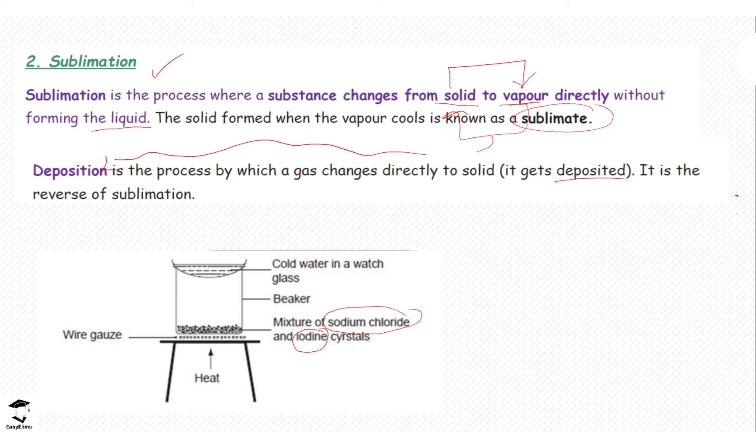We have the heat with the wire gauge and the tripod stand, and on top of the stand we have the beaker containing the mixture, and then we have also a watch glass containing cold water. So what is going to happen is when you heat the mixture, the iodine crystals which sublime are the ones that are going to sublime, and then the fumes are going to go up in the beaker because it has changed from solid to liquid. Then when it comes into contact with the cold watch glass, it's going to be deposited.